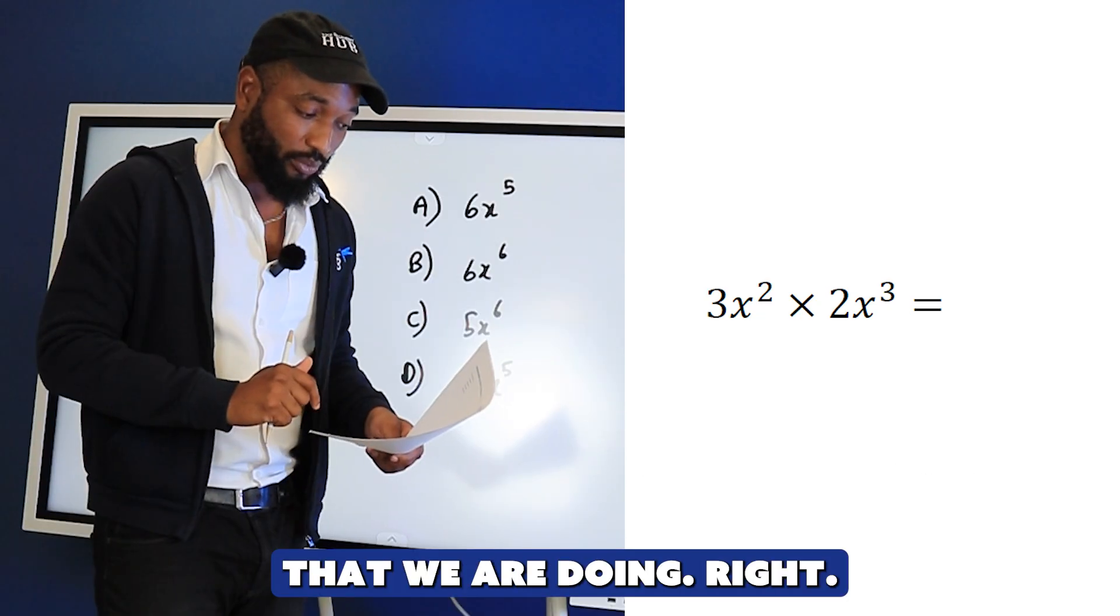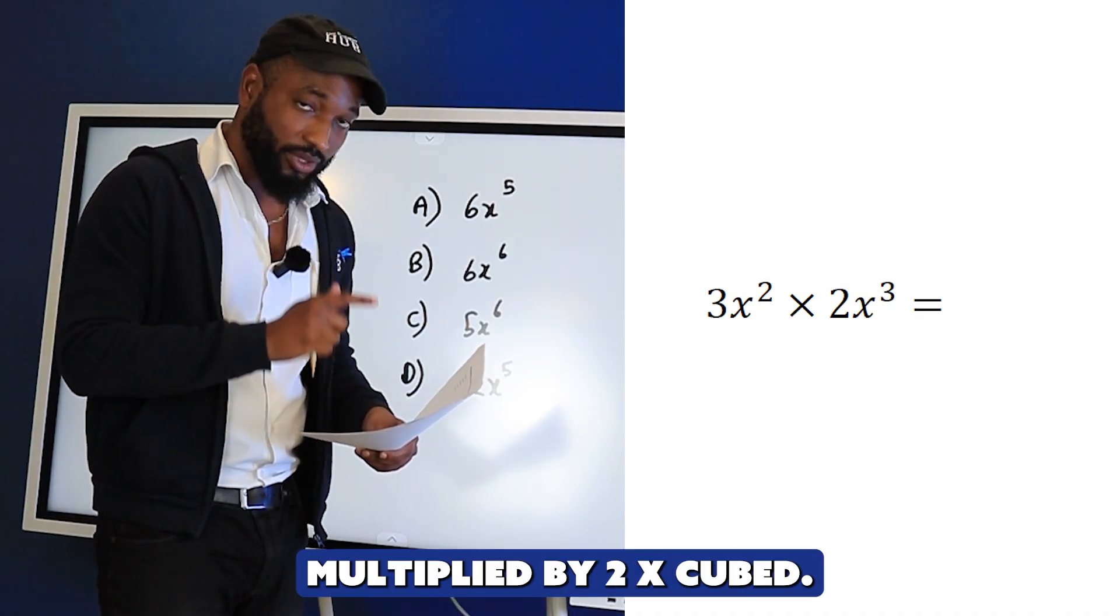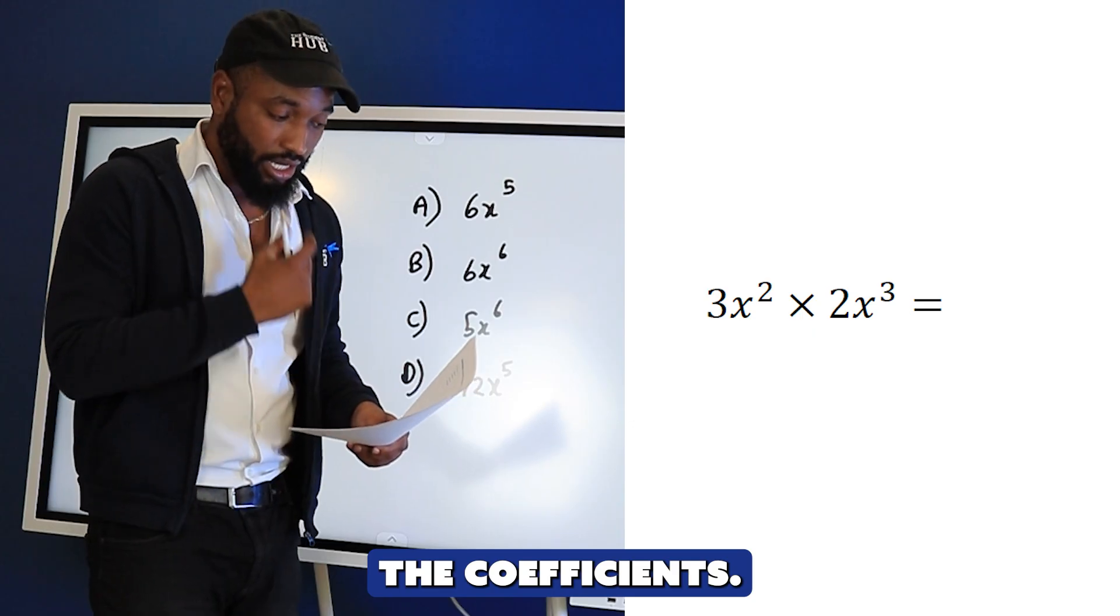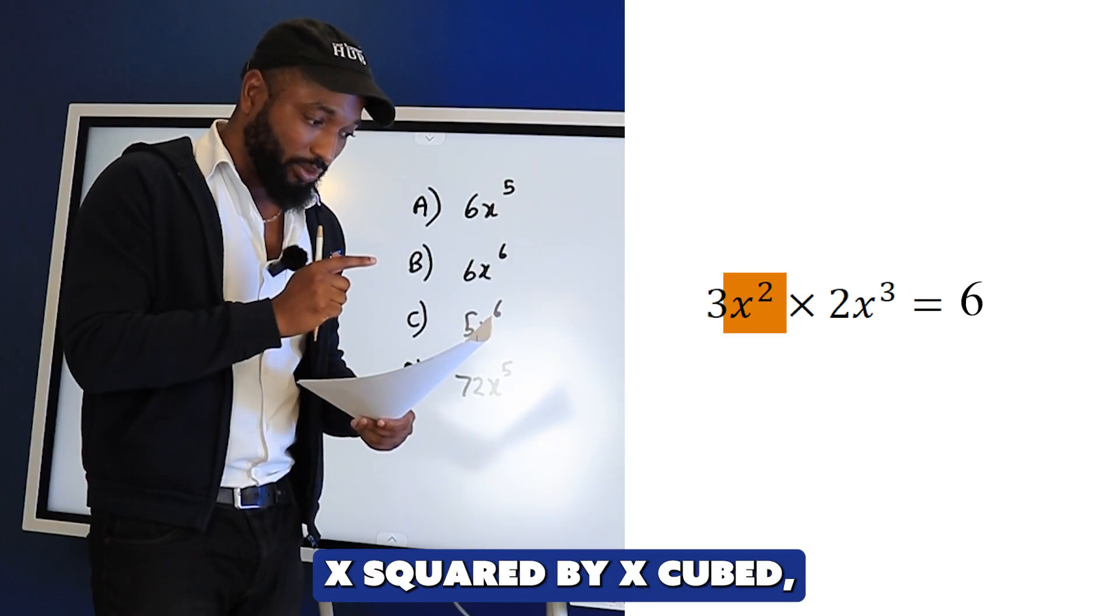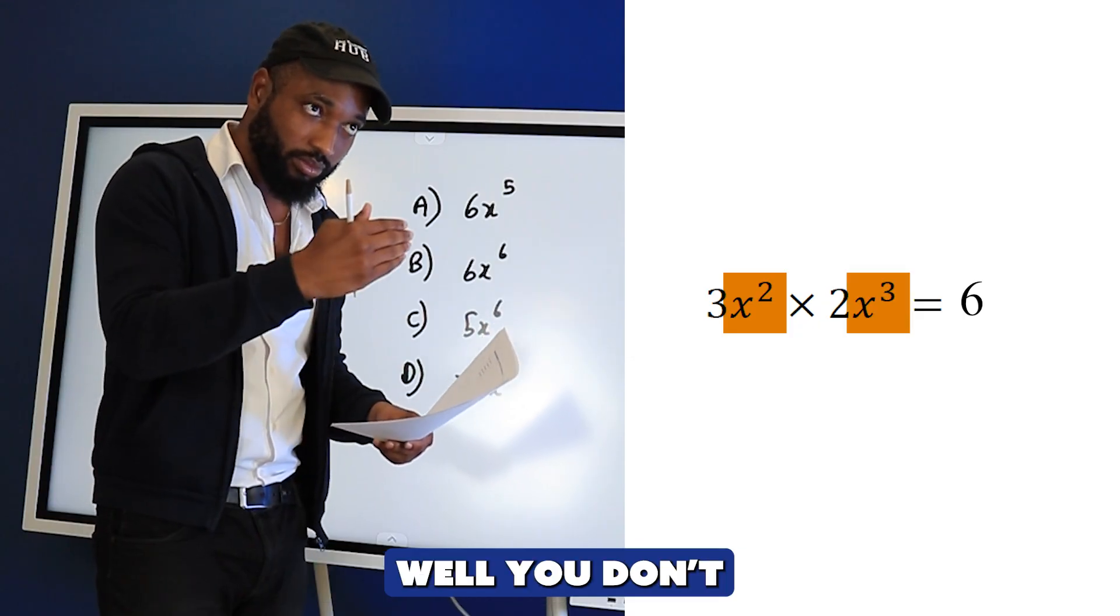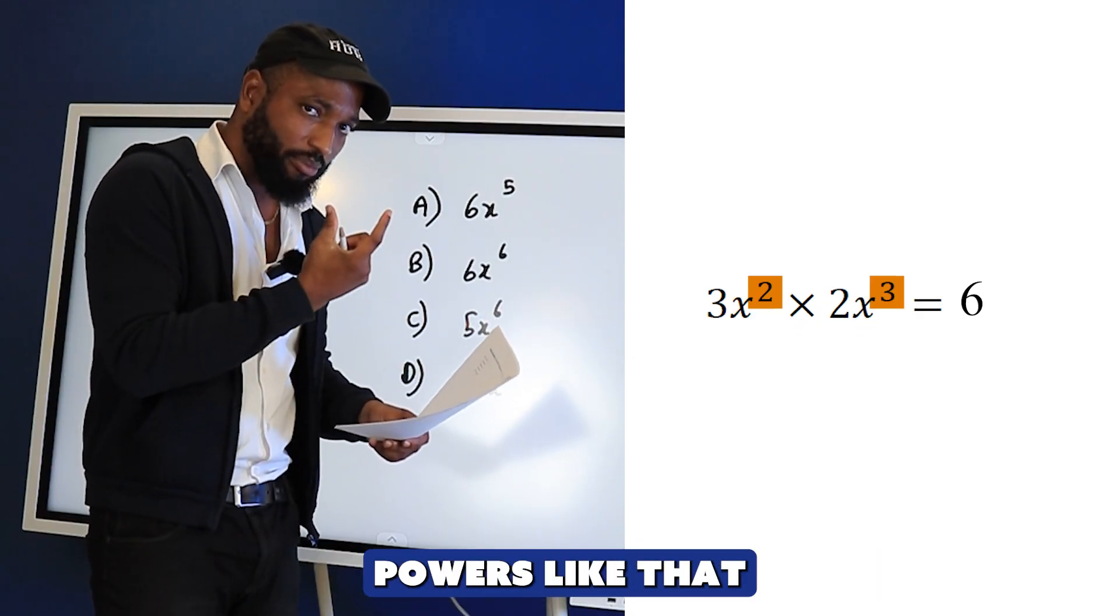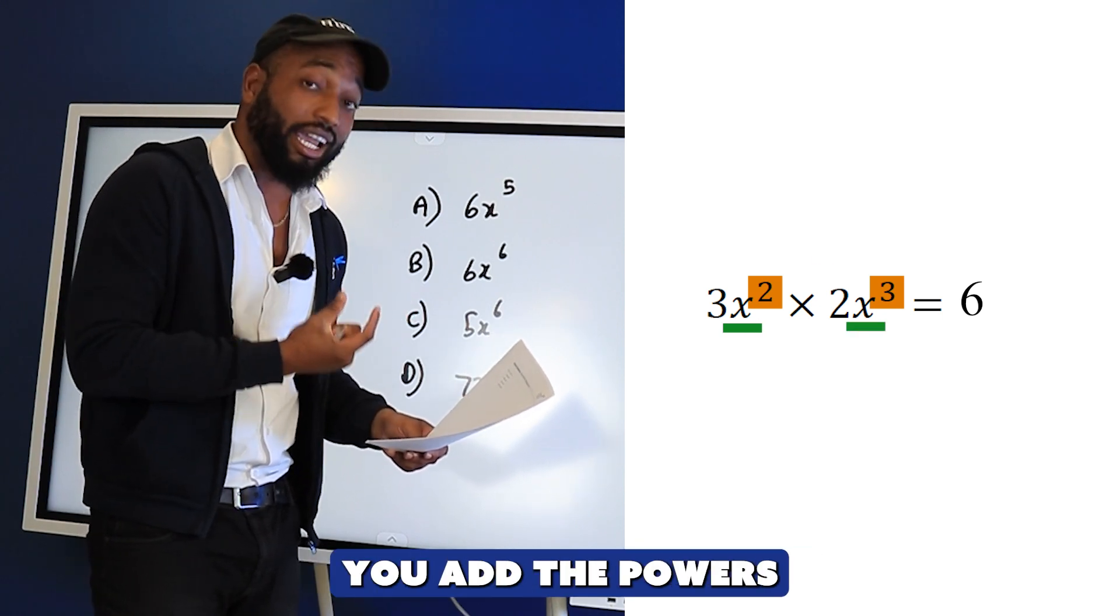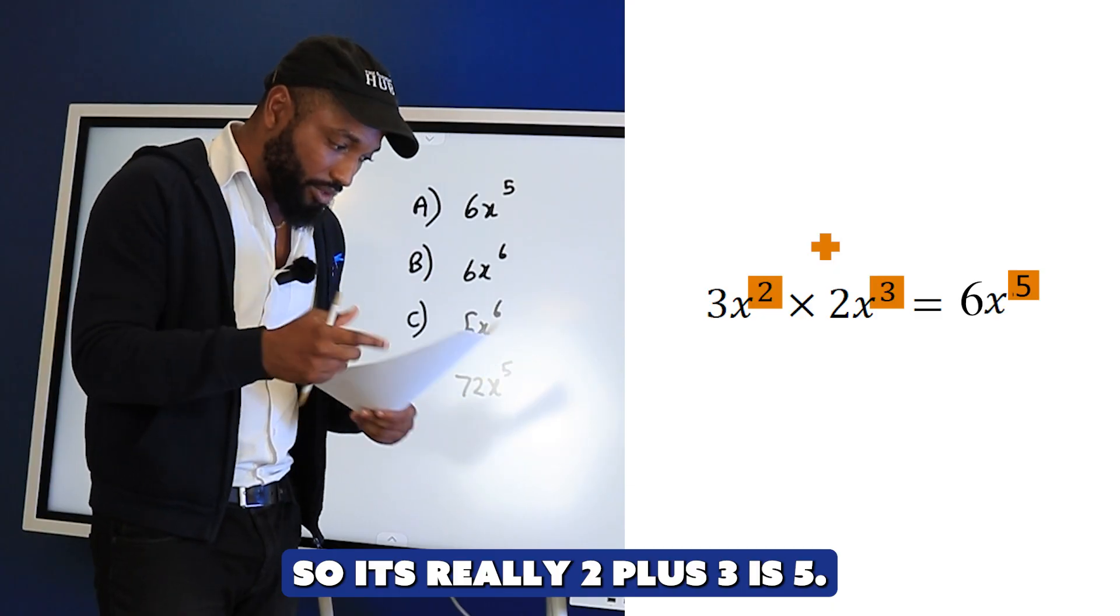3x² multiply by 2x³. The 3 and the 2 will multiply by each other - they're just the coefficients. 3 by 2 is 6. x² by x³ - you don't multiply the 2 by the 3. When you're multiplying powers with the same common base, you add the powers. 2 plus 3 is 5.